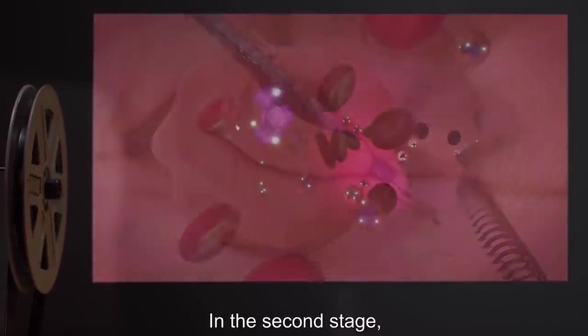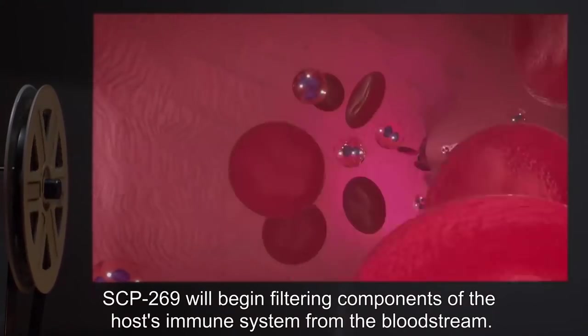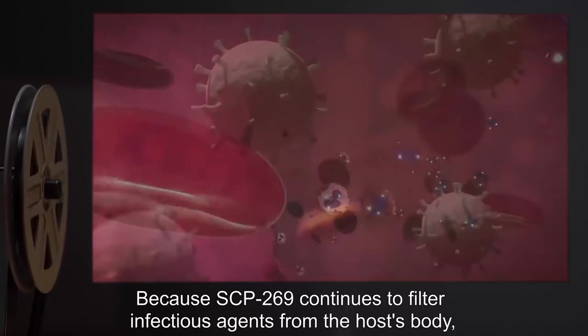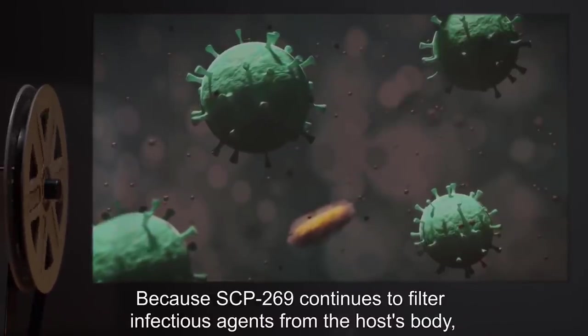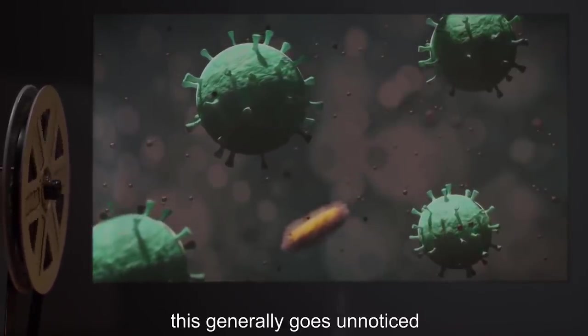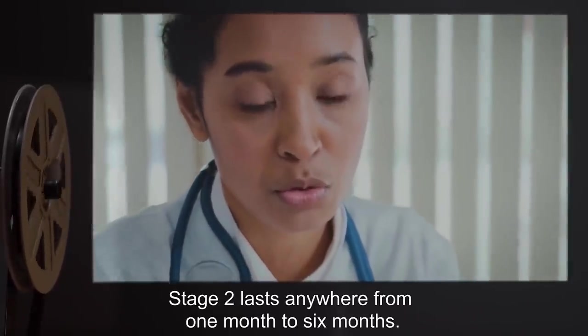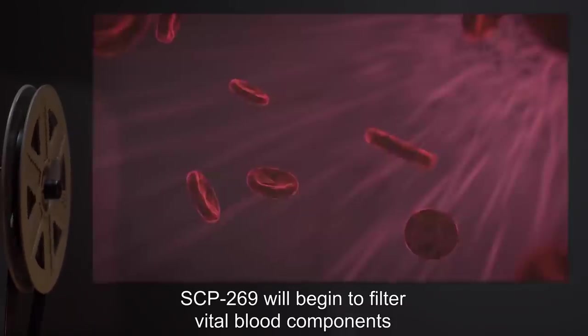In the second stage, SCP-269 will begin filtering components of the host's immune system from the bloodstream. Because SCP-269 continues to filter infectious agents from the host's body, this generally goes unnoticed unless a blood analysis is performed. Stage 2 lasts anywhere from one month to six months.